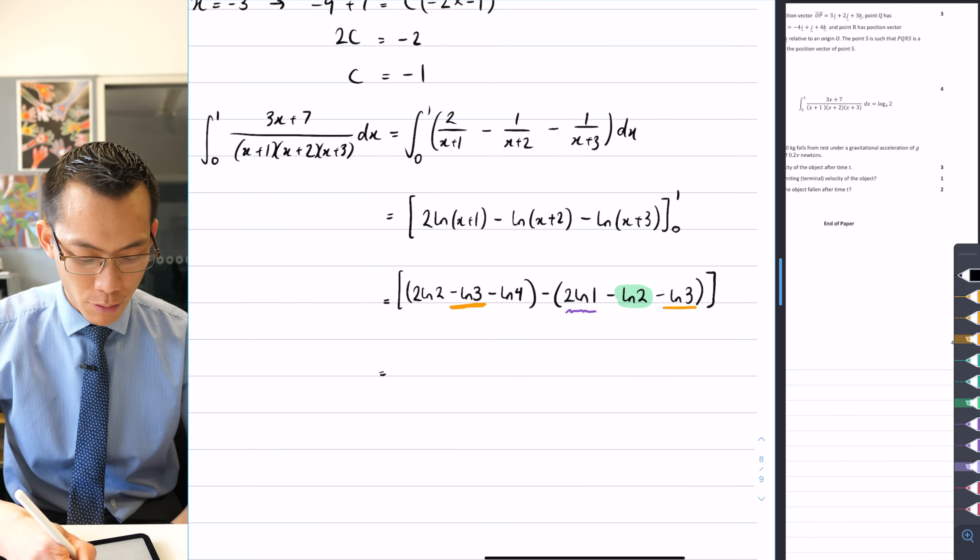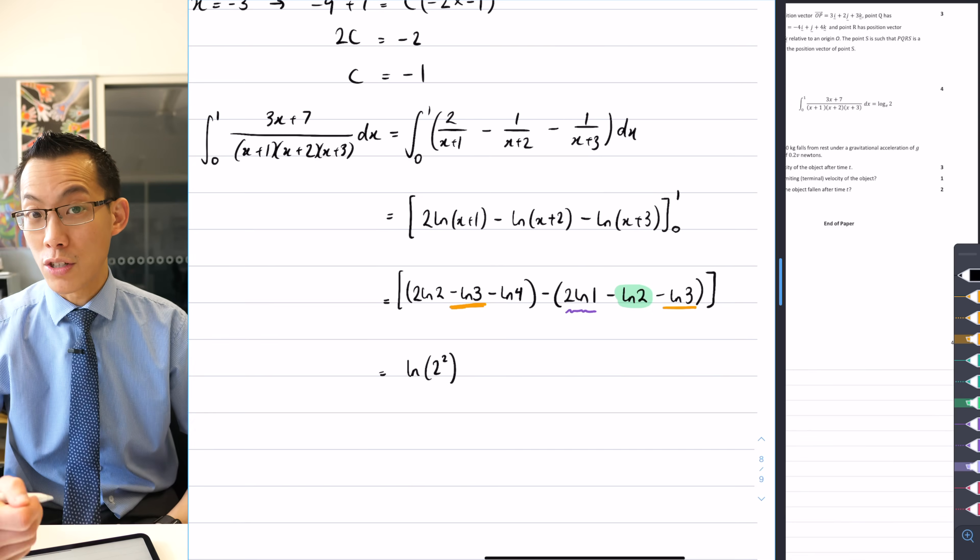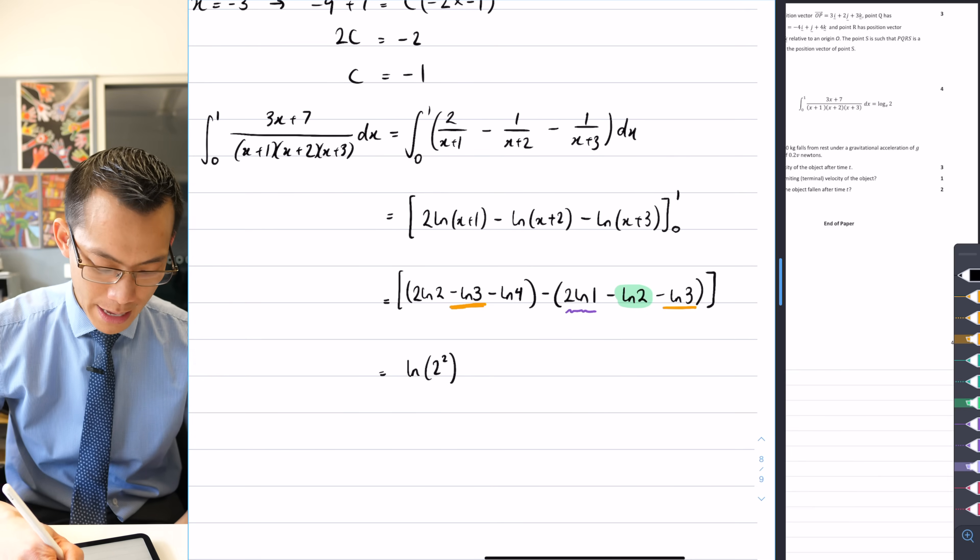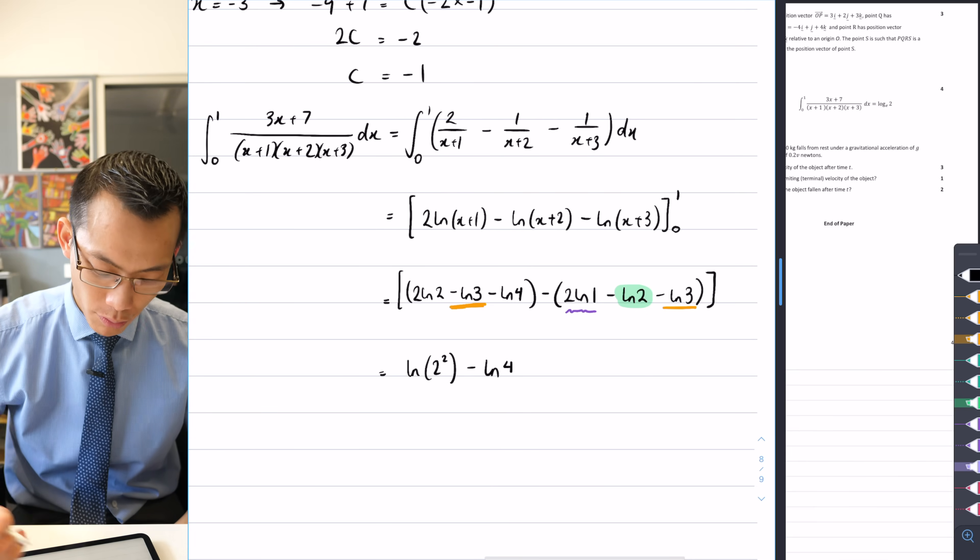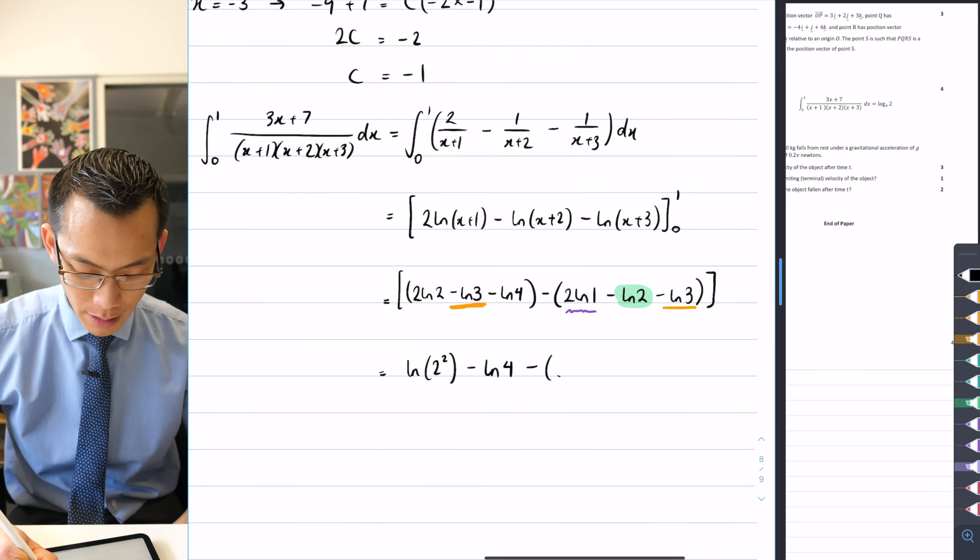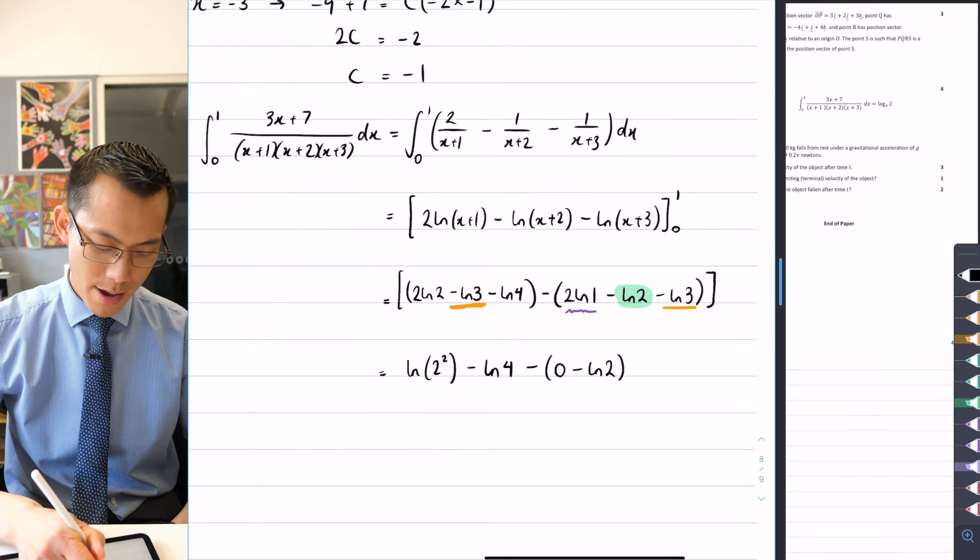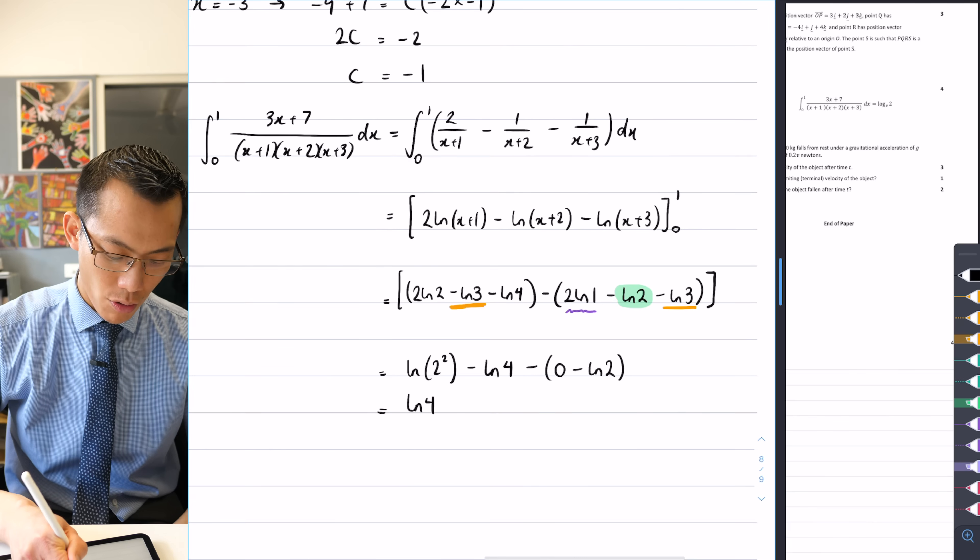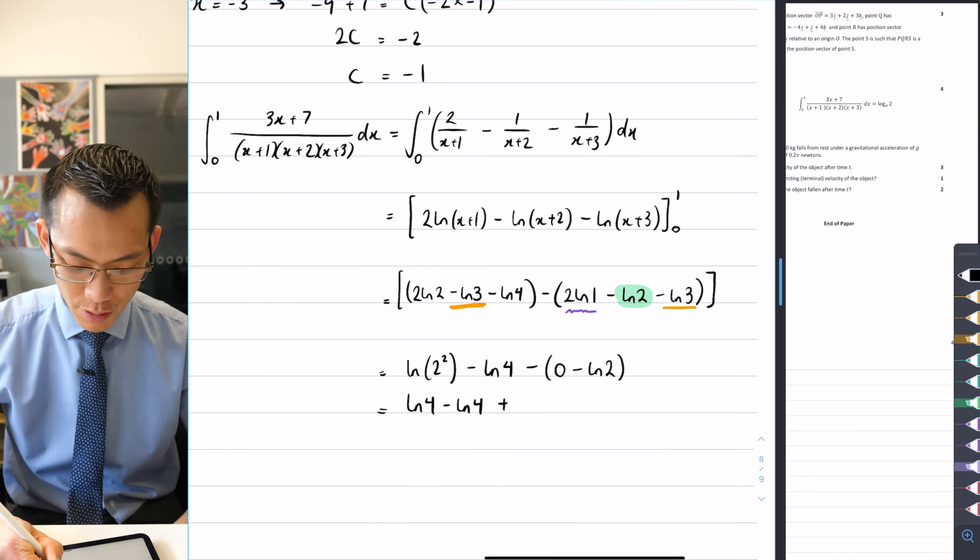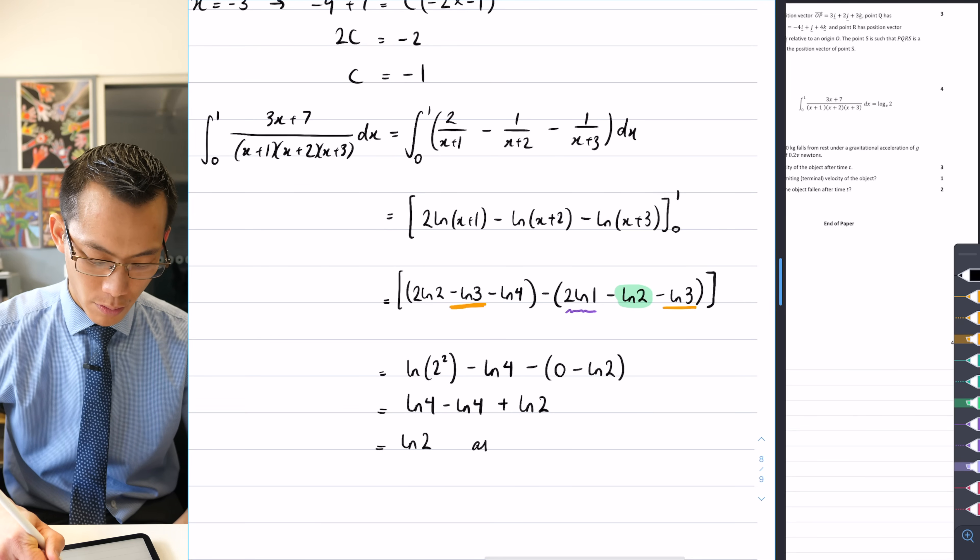Two log 2, I'm going to write that as log of 2 squared, because that's what we can do with the power law of that index. The log 3 and the log 3 can cancel. That leaves me with a minus log 4. Then I'm going to subtract the zero take away log 2 that was left there. And from here, I've got log 4 take away log 4, double negative for the log 2. And there is the log 2 as required.